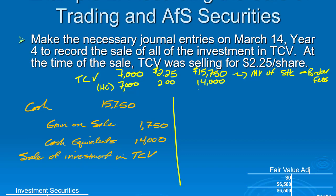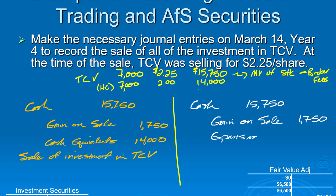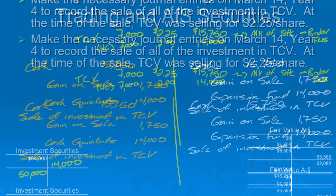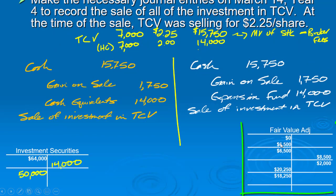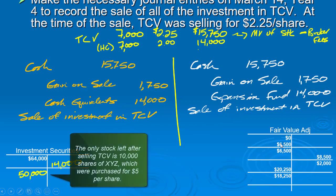The only difference for the long-term investment is that instead of taking it out of the cash equivalents account, we'll take it out of our expansion fund account. So: debit cash $15,750, credit gain on sale $1,750, and credit the expansion fund. After the sale, the historical cost in the asset account has changed because the stock I have left only cost me $50,000.